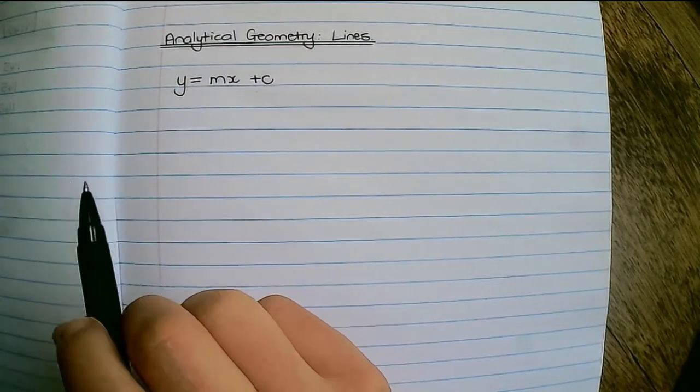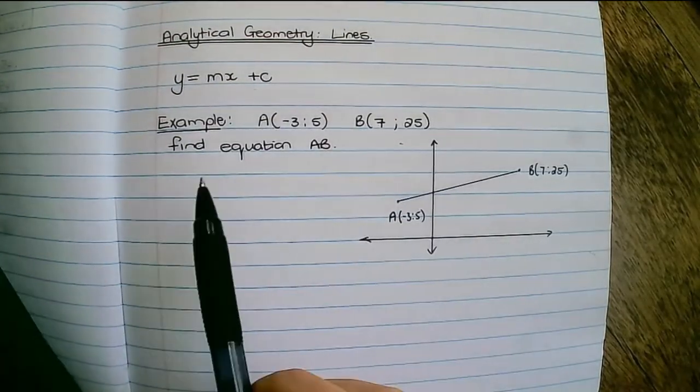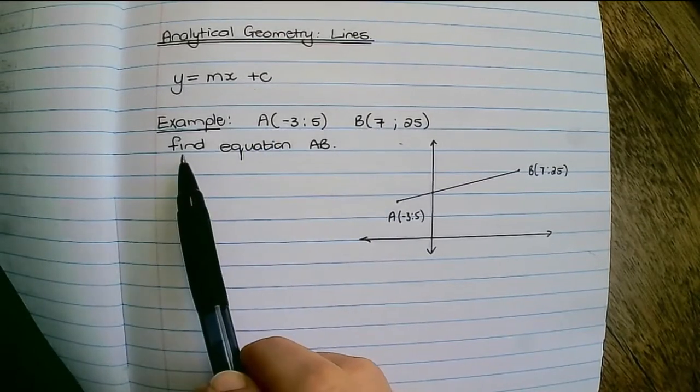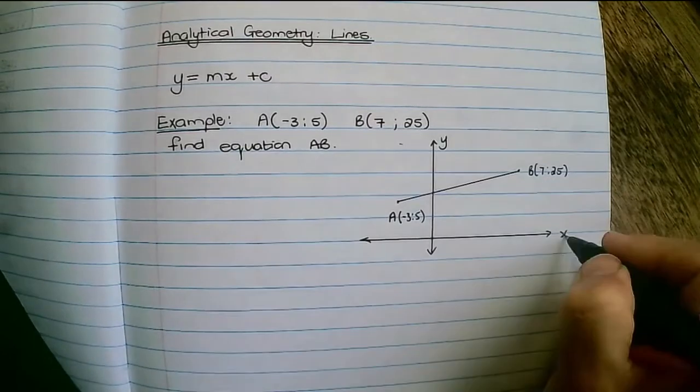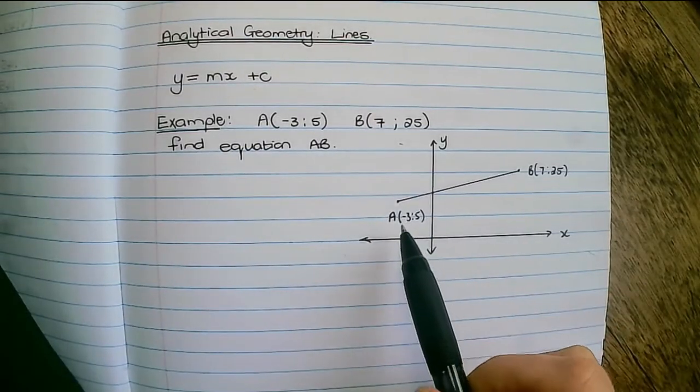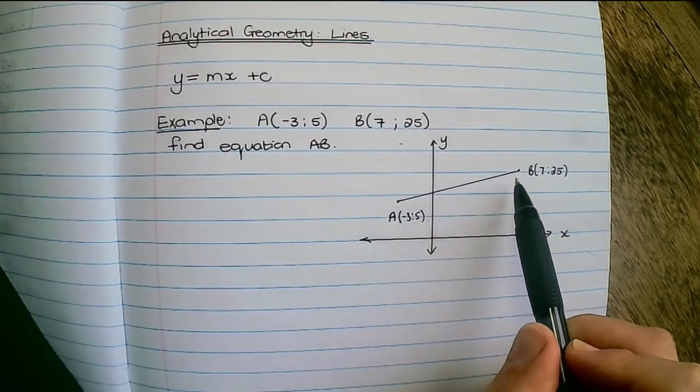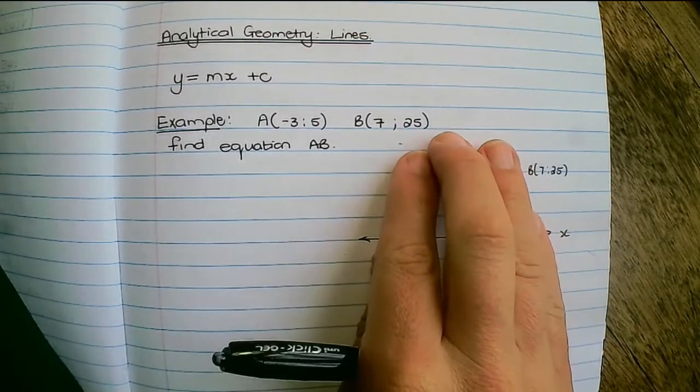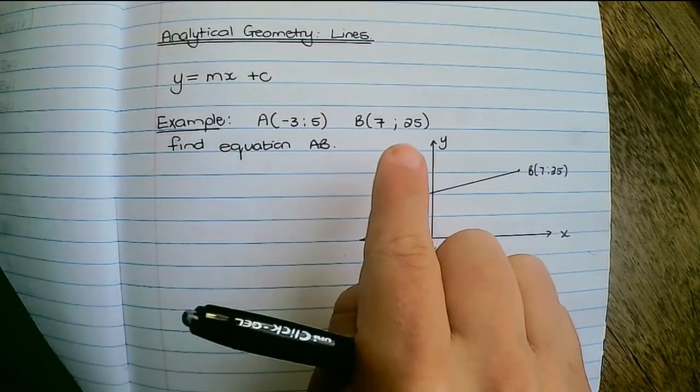Now we can use the same equation in analytical geometry to find the equation of a line. Let's say we are given two points A and B and we want to find the equation of line AB. Now these points can also be represented on the Cartesian plane. It's not necessary for us to have a diagram in order to solve the equation of the line.